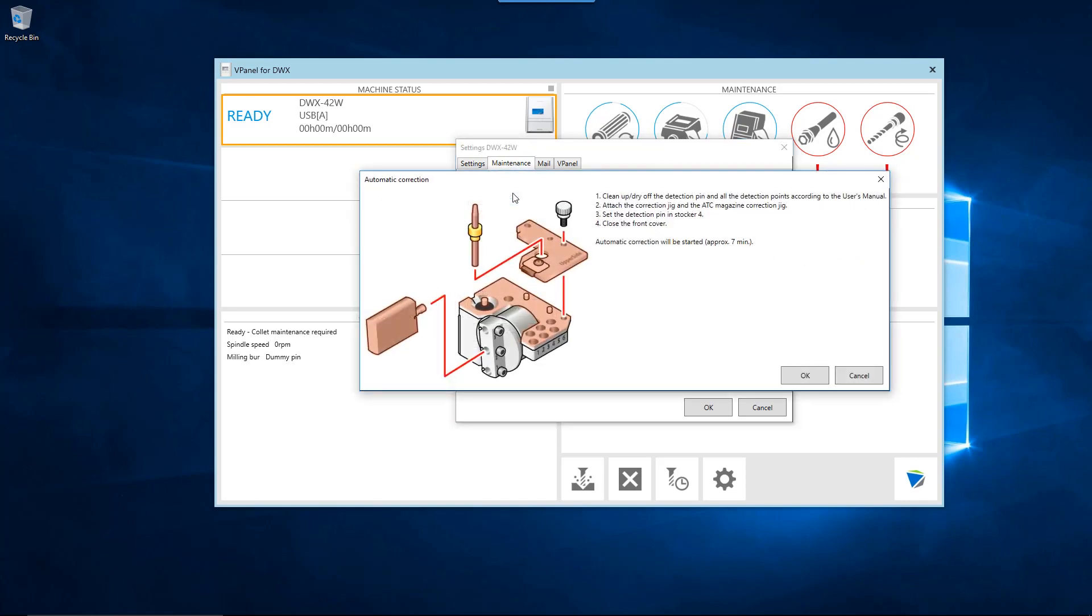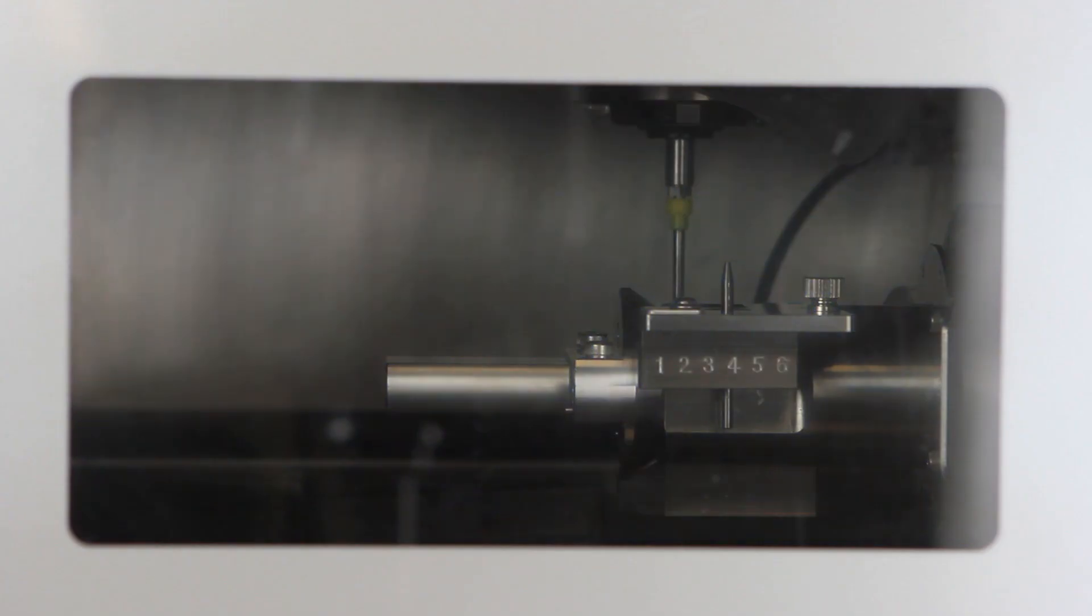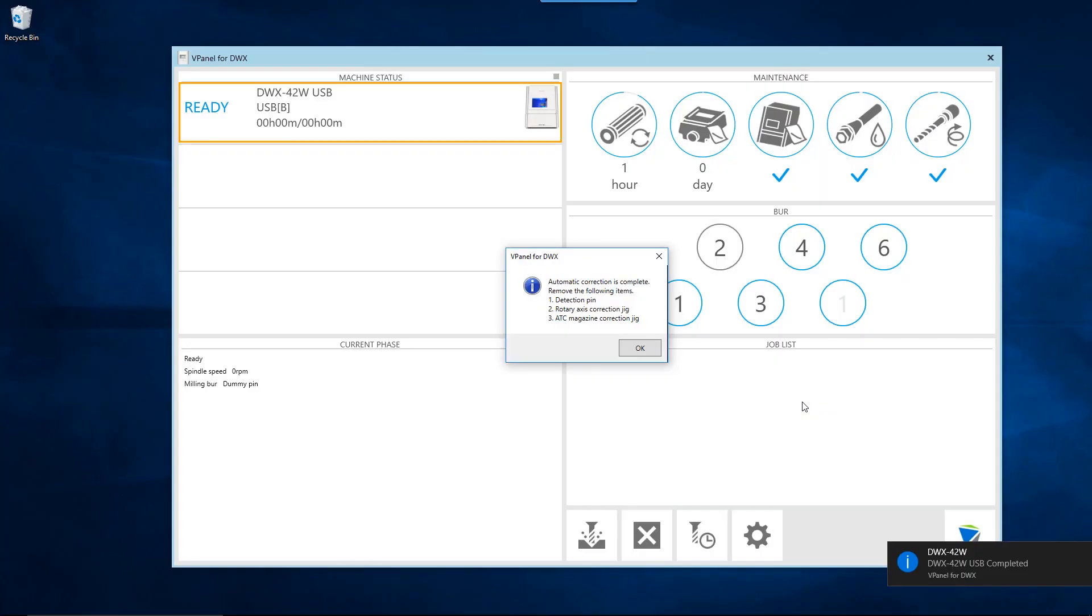Click the OK button when you have confirmed that all work pieces have been removed from the mounting part and both correction jigs are set up properly. Once the operation is completed, click the OK button to close the vPanel pop-up and complete the automatic correction procedure.